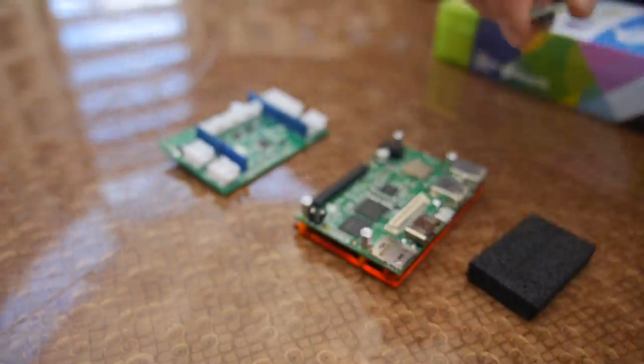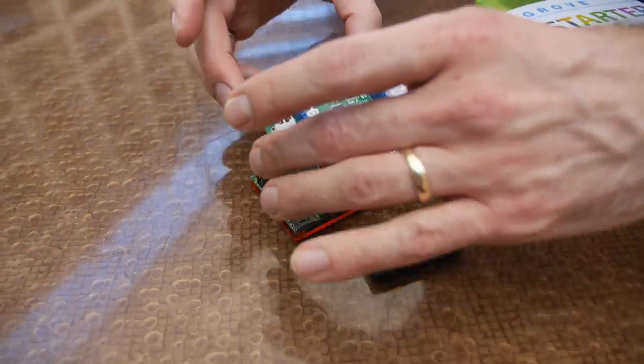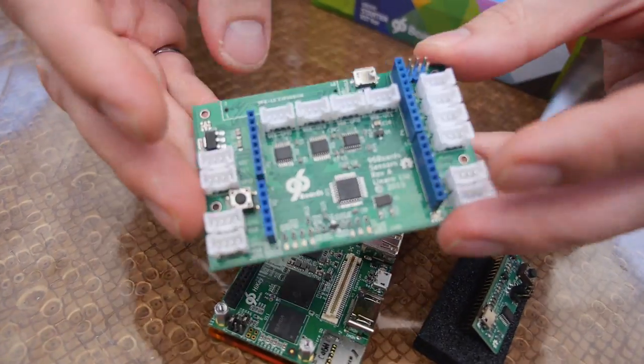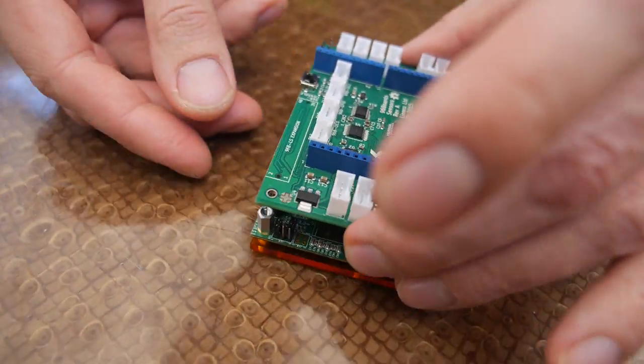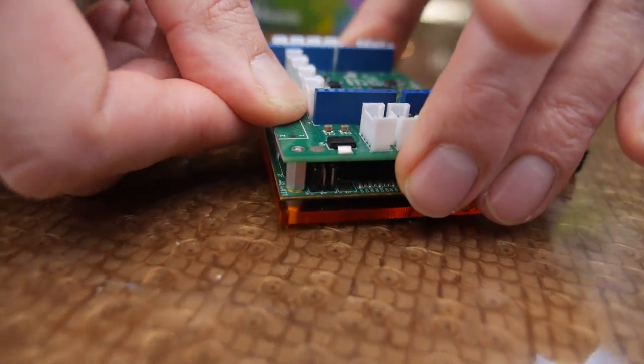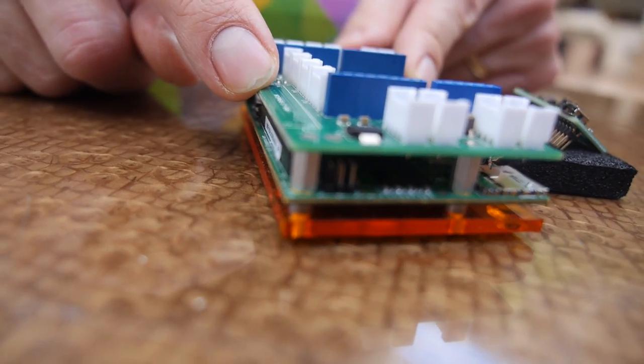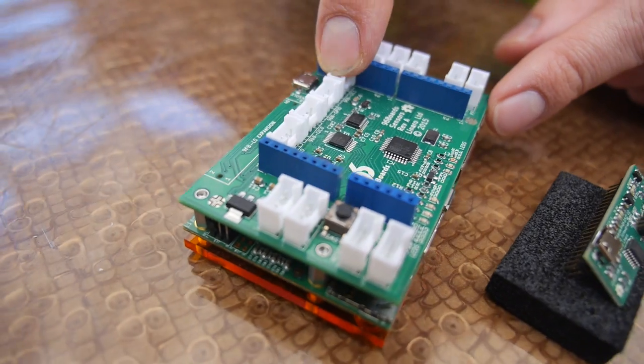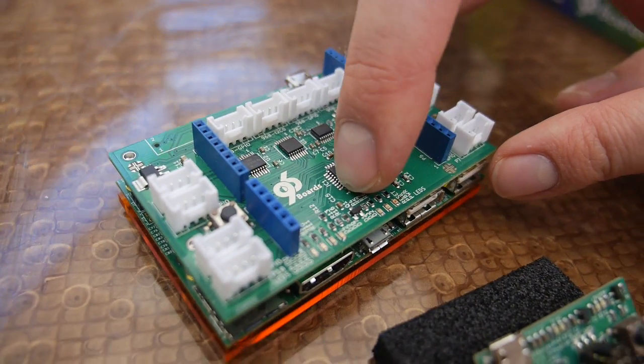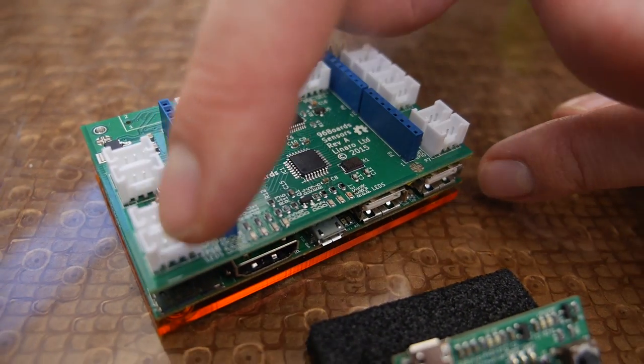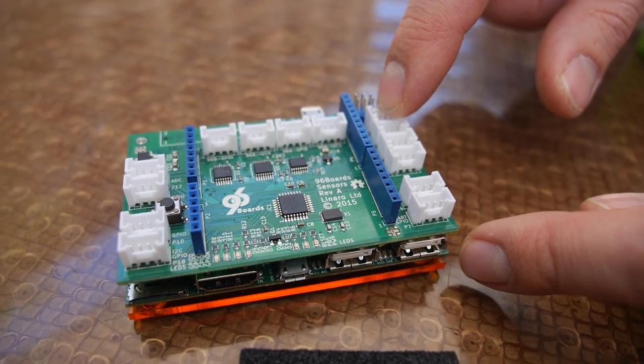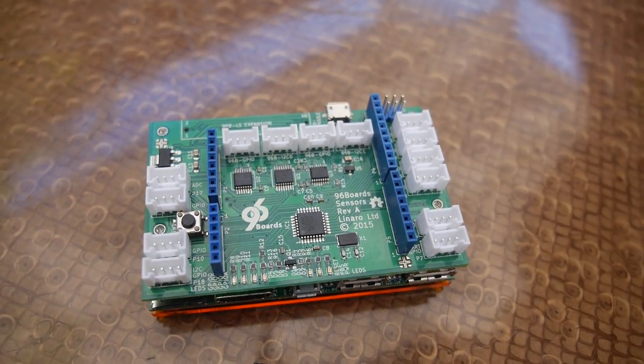And the other board that we worked on, and this one was a lot of fun, is the 96 board sensors platform. And this board provides, it hooks up to the low speed I/O. It has level shifters for I/O directly to the 96 boards base board. But it also has an Atmel coprocessor with grove connectors to hook up to various sensors using GPIO or I2C.